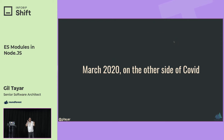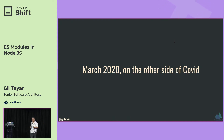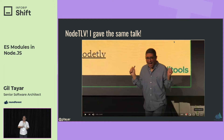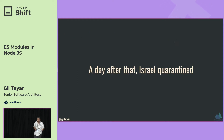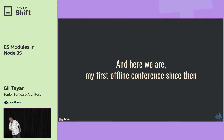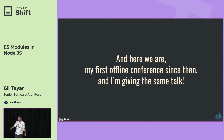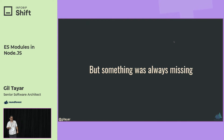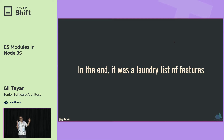A little story first. On March 2020, on the other side of COVID — remember that? — it was the 3rd of March, I gave this talk at Node.js in Tel Aviv. A day after, we got quarantine. If the conference was one day later I would never have given this talk. My first offline conference since then is this amazing one, and I'm giving the same talk — it's a full circle. It was a good talk, I had good vibes, lots of people interested, but something was missing. In the end it was just a laundry list of ESM features.